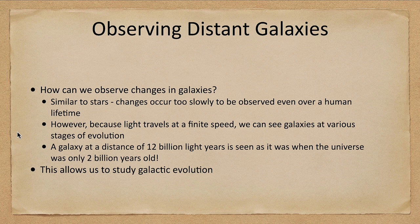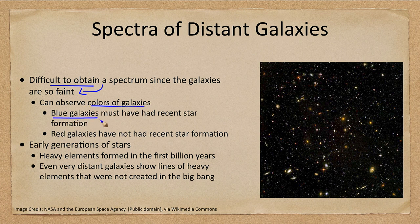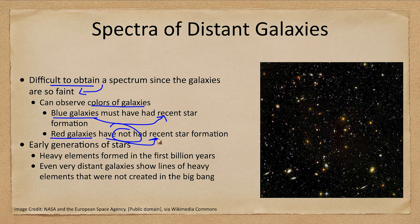How can we study these galaxies? We look at their spectrum, though this can be difficult because galaxies are faint. However, one thing we can observe when we look at galaxies such as the ones pictured here are the colors of the galaxies. A blue galaxy tells us there has been recent star formation; a red galaxy says there has not been recent star formation. So we can tell which galaxies have had star formation recently and which have not.